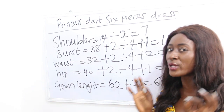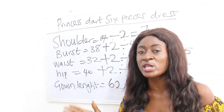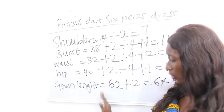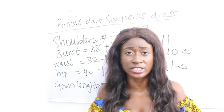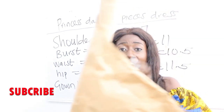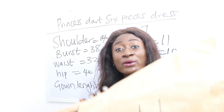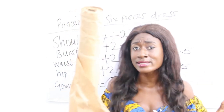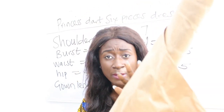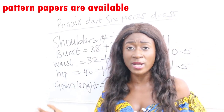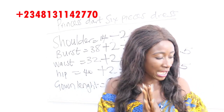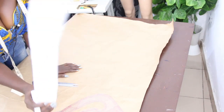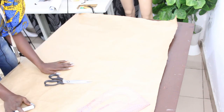Notice that we did not divide any measurement by 6, even though we want to achieve a 6-piece dress. Now we are going to draft our pattern before moving to the fabric. I have my pattern paper here which is about 60 inches long - it's available at our store. For topics requiring 60 inches and above I recommend this paper, and I'll put the link in the description box.